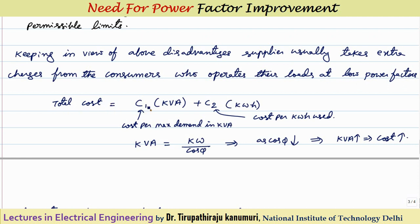For industries, the two-part tariff is: C1 × KVA maximum demand (where C1 is cost per unit of KVA maximum demand) plus C2 × total kilowatt-hours consumed (where C2 is cost per kilowatt-hour). The first term depends on KVA demand. Since KVA equals kilowatts divided by cos phi, as cos phi decreases the KVA demand increases. So consumers operating at low power factor have higher KVA demand and must pay more.